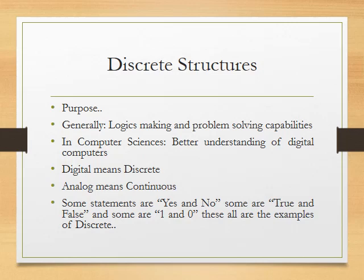I have an example of this clock — which is discrete and which is analog, so you can find out. Some statements are yes and no, some are true and false, and some are one and zero. These are all examples of discrete values. Yes/no, true/false, one/zero — binary operations, computer language operations — these are all discrete structure values.